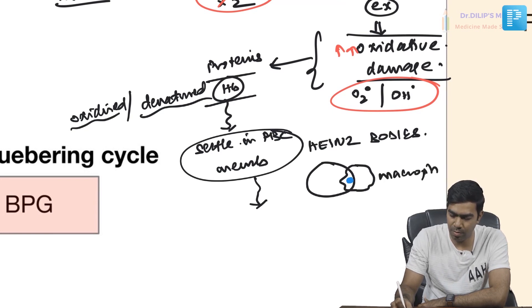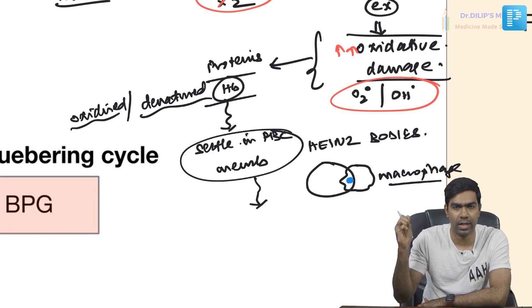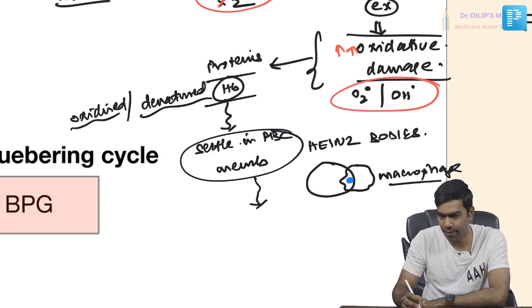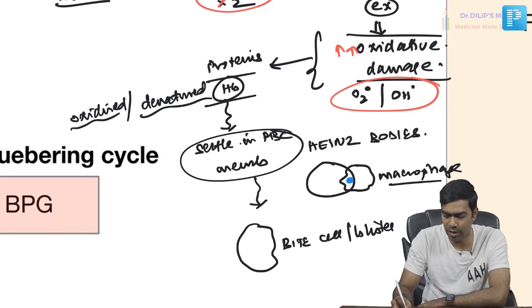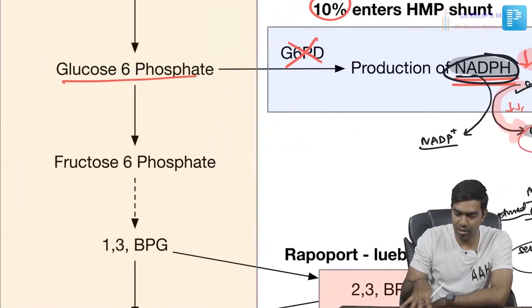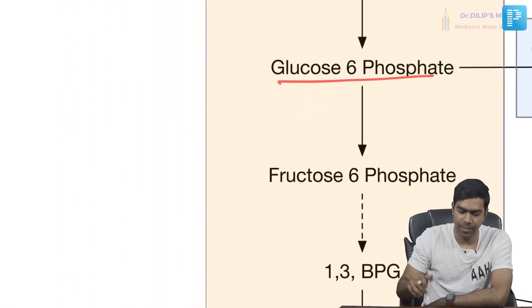Areas of the RBC membrane containing Heinz bodies are bitten off by macrophages, resulting in what we call bite cells or blister cells. This is the classic morphological finding in G6PD deficiency. All these problems stem from low NADPH production — this is the core pathophysiology.